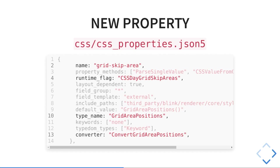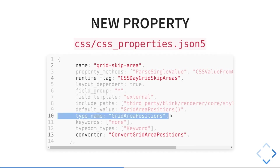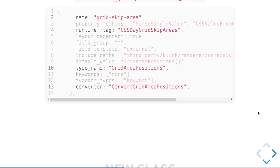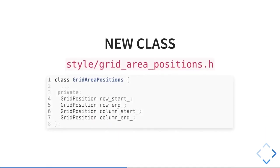Now let's start to add the new property. When we add a new CSS property in Chromium, we have a JSON file again. There are many attributes, but basically the name of the property is important. The runtime flag means this property is only enabled when the runtime flag is enabled — you get that for free. The grid-area-positions type is what this property returns when you query it in the style. We already have grid-position for grid lines, because a grid line can be a number 1 but it can also be named — like 'foo' referring to a named line. So it's not just a basic integer. The grid-area-positions class is very simple: row-start, row-end, column-start, column-end, each with a grid-position.